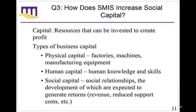Different types of capital: physical capital would be resources that can be invested to create consumer goods — physical things. Human capital is our knowledge and skills that can be invested to create consumer goods. And social capital is where the book gets disastrous.